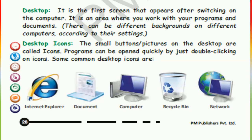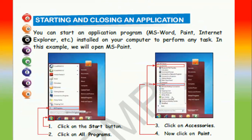Desktop is the first screen that appears after switching on the computer. It is an area where you work with your programs and documents. There can be different backgrounds on different computers according to their settings. Desktop icons are the small pictures on the desktop; programs can be opened quickly by double-clicking on icons. Some common desktop icons are Internet Explorer, Document, Computer, Recycle Bin, and Network.